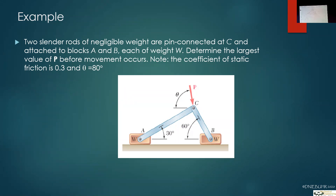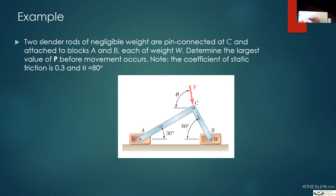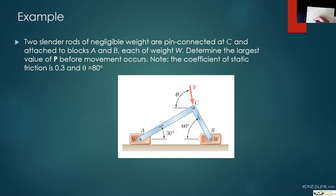Looking at the doc cam, the first thing we want to figure out is how P is transferred to the two bars AC and BC. Looking at location C, we have P coming down at 80 degrees — that's 10 degrees from vertical. We know that AC comes in at 30 degrees and BC at 60 degrees, giving us force AC and force BC. All three must be in equilibrium, so we can draw a force triangle.